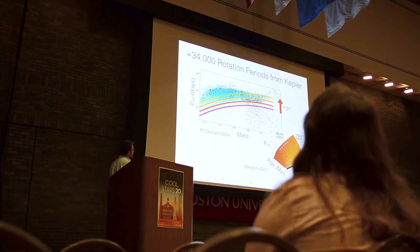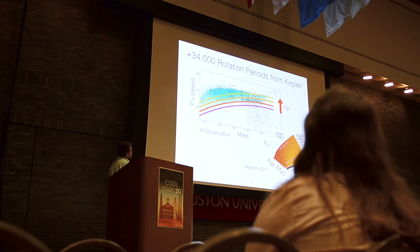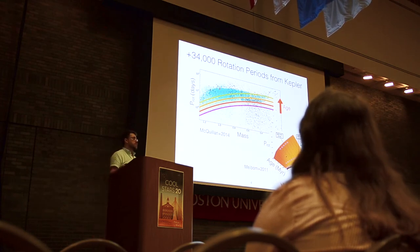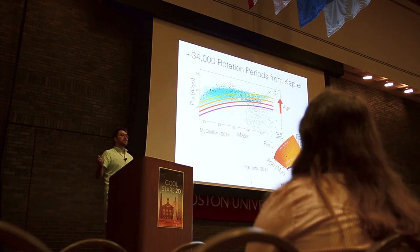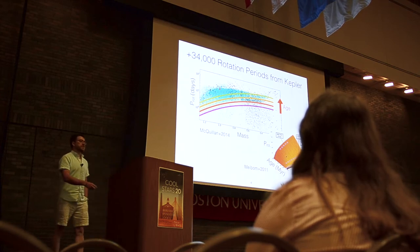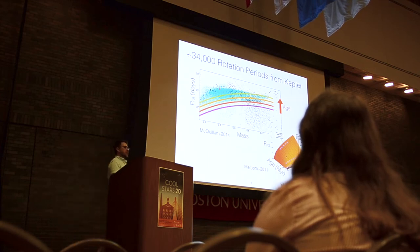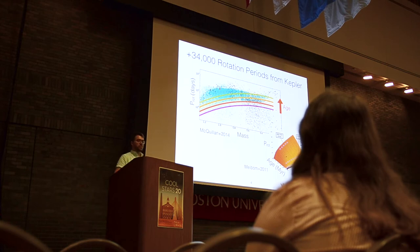A star here — say M-dwarf stars that people in this room care about — should march upwards in this diagram. And in principle, we could infer ages for tens of thousands of field stars directly. This is the dream, this is the promise of gyrochronology that many people in this room are working hard to fulfill.